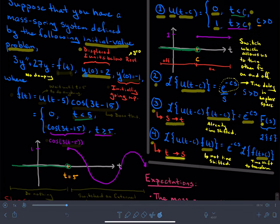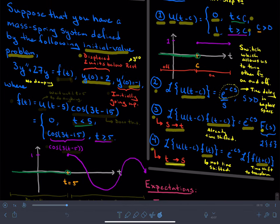The rest position is that y equals 0. And it has y prime being equal to negative 1. Y prime represents the velocity, so that means while the mass is displaced 2 units below rest, it is initially going upwards as it's released.